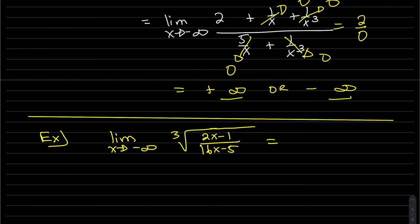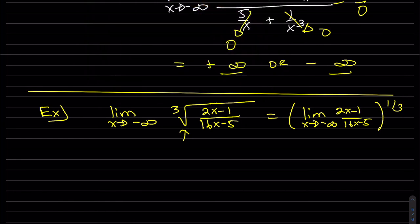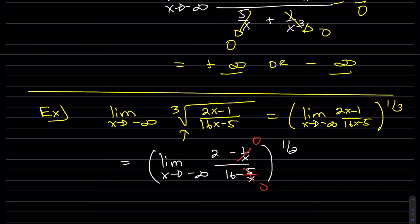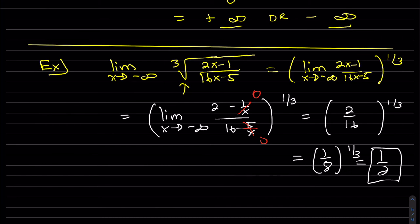For a cube root example, recall that the limit of a power is the power of the limit. The power here is one-third, so we take the limit first, then apply the one-third power. Dividing top and bottom by x, the extra terms go to zero, and we're left with two over sixteen to the one-third, which works out to be one-half.